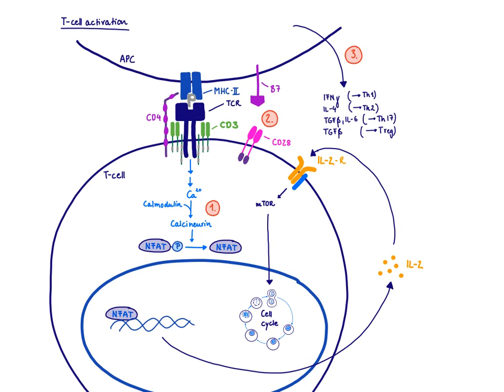Then we have signal 2, the so-called co-stimulatory signal. There is an interaction between B7 and CD28, which keeps activating the T-cell and stops anergy. The combined signals 1 and 2 lead to the secretion of IL-2, and IL-2 can act in an autocrine fashion on the IL-2 receptor to drive proliferation.